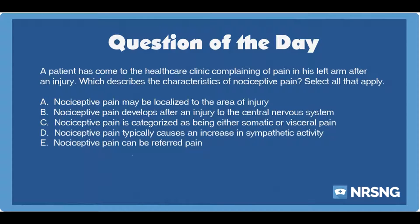Again, a patient has come to the healthcare clinic complaining of pain in his left arm after an injury. Which best describes the characteristics of nociceptive pain? Select all that apply. A. It may be localized to the area of injury. B. It develops after an injury to the central nervous system. C. It is categorized as being either somatic or visceral pain. D. It typically causes an increase in sympathetic activity. E. It can be referred pain.